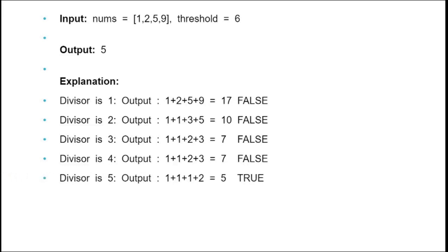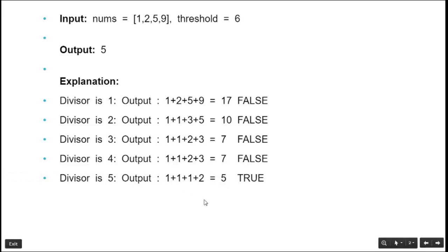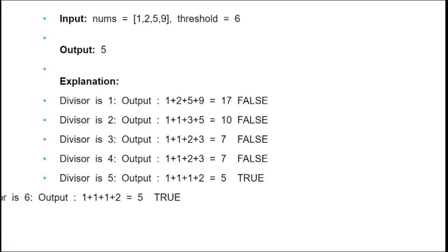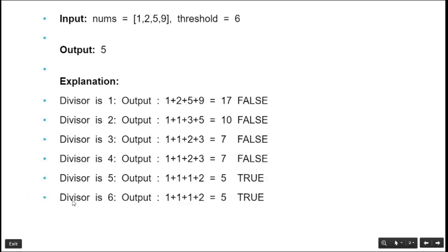When the divisor is 5, the output is 5 which is less than 6 — that condition is satisfied. With divisor 6 the output is also 5, which is less than 6, but it is not the smallest divisor. So the answer in this case is divisor 5, the smallest divisor such that the sum is less than or equal to the threshold.